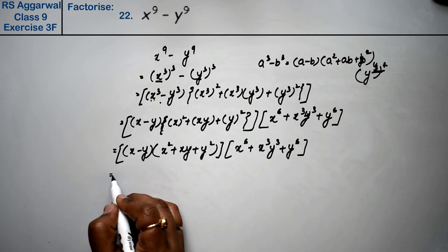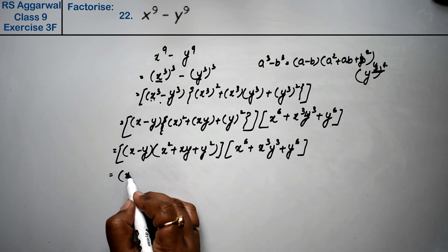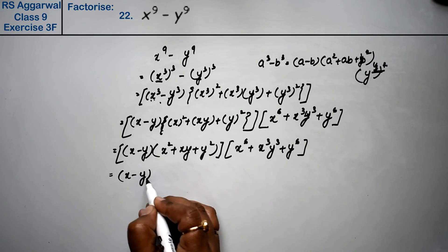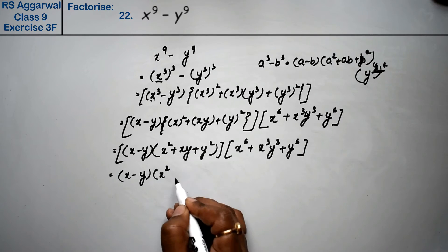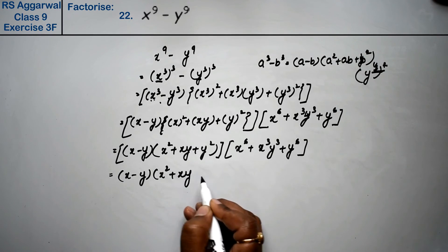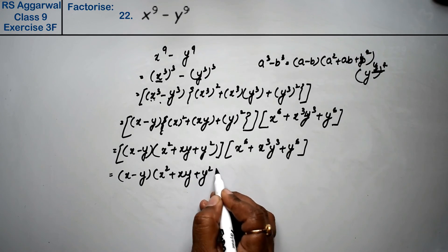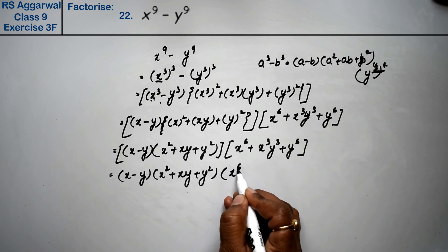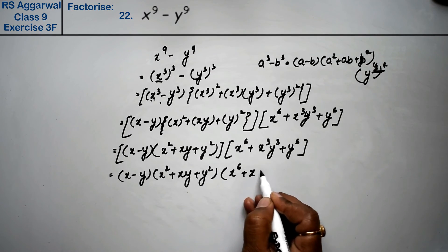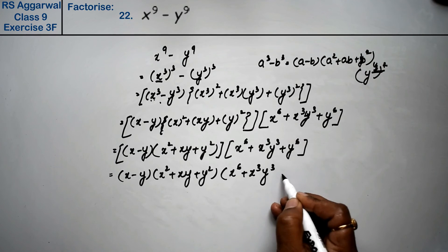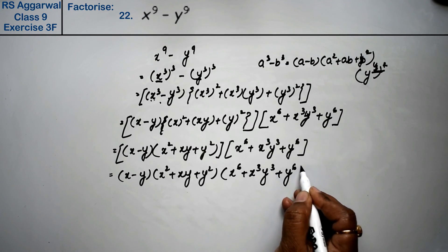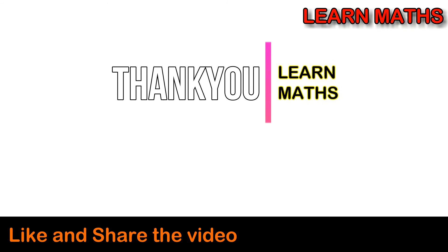So opening all brackets, the final answer is: x minus y, times x square plus xy plus y square, times x power 6 plus x cube y cube plus y power 6. Thank you. If you understand the step-by-step solution of this video, please subscribe to my channel on Maths and share it with your friends. Thank you.